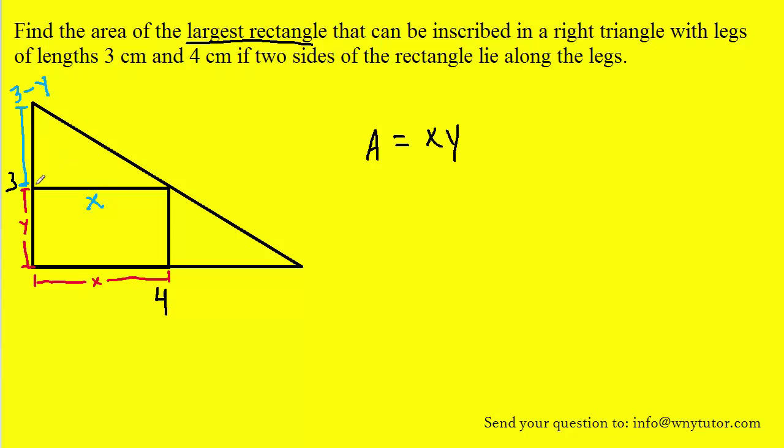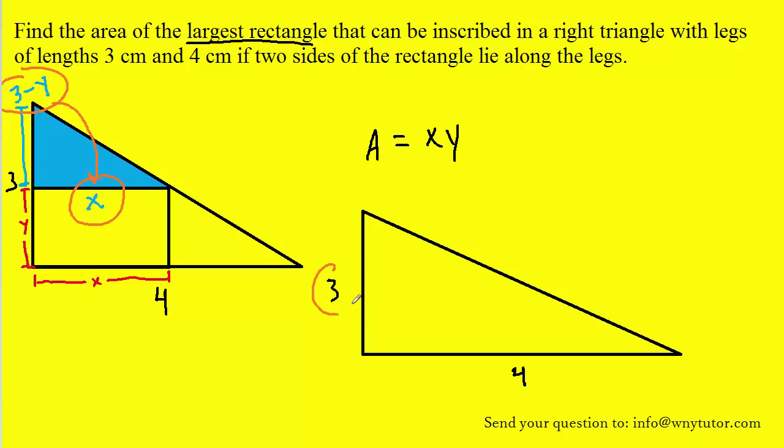And the question is, why did we do that? Well, let's focus our attention on this upper triangle here for just a second. And what we'll notice is that this blue triangle is going to be similar to the larger triangle. And to get a better appreciation of that, let's redraw the larger triangle. So again, the blue triangle is similar to this large triangle here. And thus, because they're similar, we can write a proportion. We can say that 3 minus y is to x, as 3 is to 4.